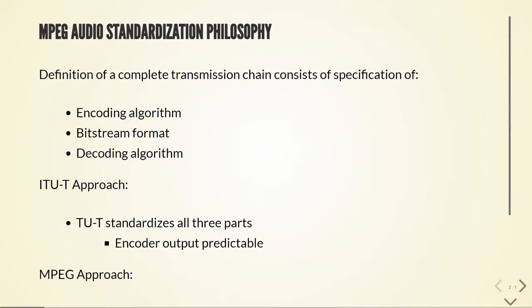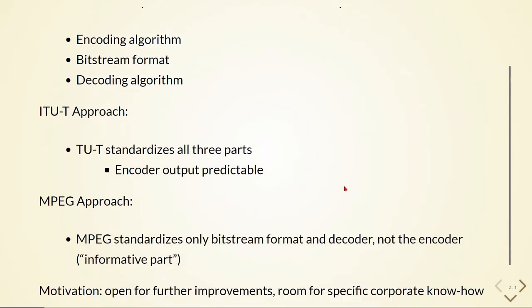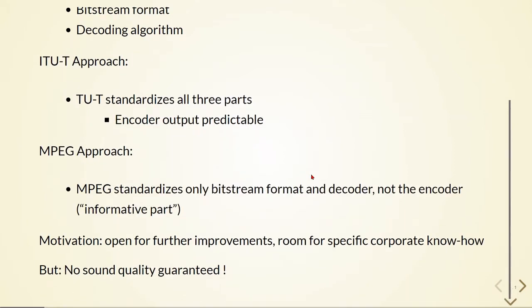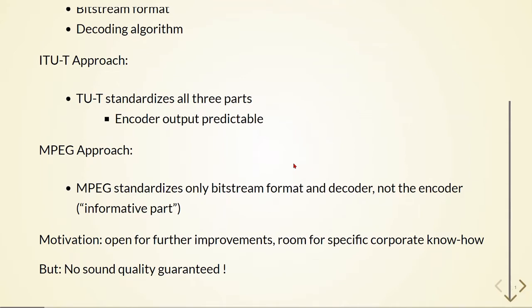The definition of a complete transmission chain consists of the specification of an encoding algorithm, the bitstream format, and the decoding algorithm. We have two different approaches: the ITU-T approach, which standardizes all three parts so the encoder output is predictable, and the MPEG approach, which standardizes only the bitstream format and the decoder — not the encoder, the informative part. The motivation behind this is to be open for further improvements and room for specific corporate know-how. However, there is no sound quality guaranteed.